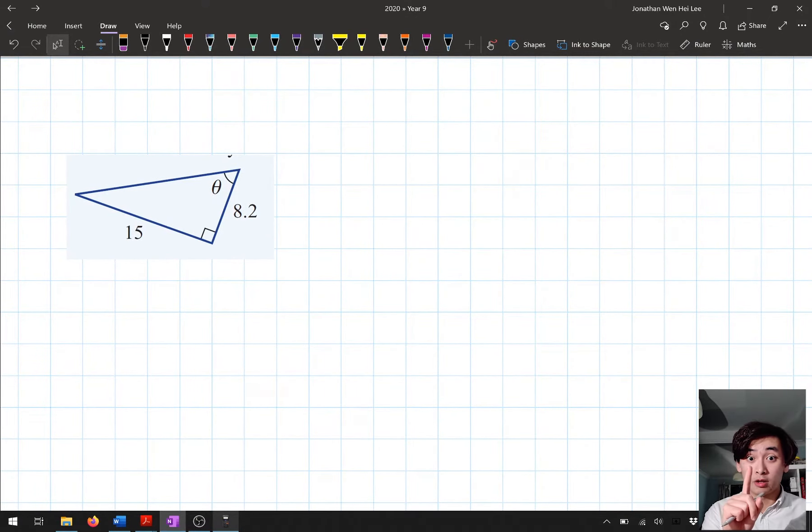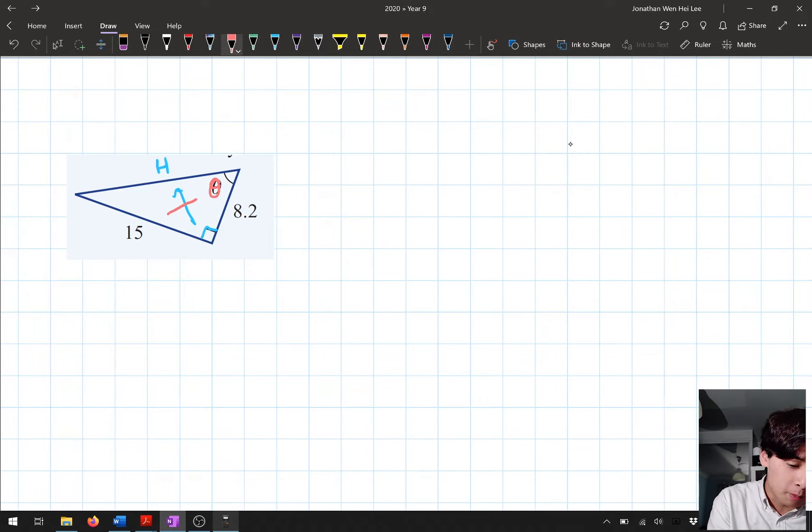First step, label your sides, identify the trig ratio. Right angles over here. I go across hypotenuse. I don't have a value for the hypotenuse. I'm not going to use anything that has a hypotenuse in it. Next one, opposites. I go to my angle, theta. I don't know what theta is. I'm missing an angle. Go opposite. So this side over here is O. My 15 is O. And I'm left with my final side over here.